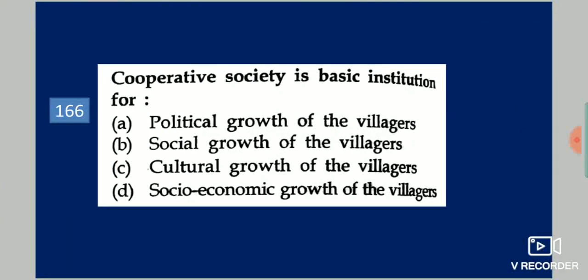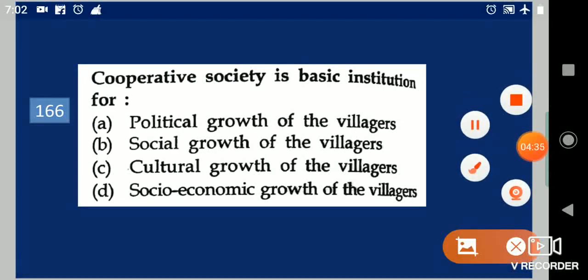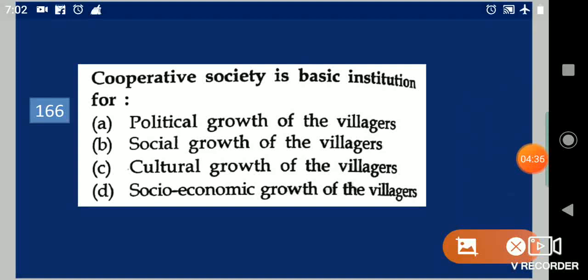Next question: Cooperative society is a basic institution for dash. Your options are: political growth of the villagers, social growth of the villagers, cultural growth of the villagers, or socio-economic growth of the villagers. Your answer is socio-economic growth of the villagers.